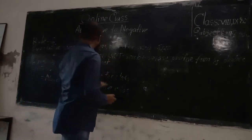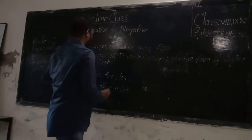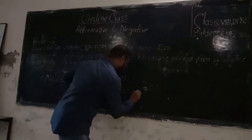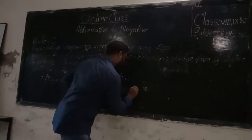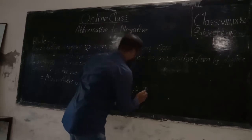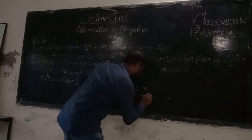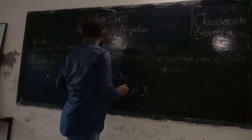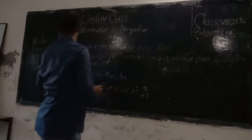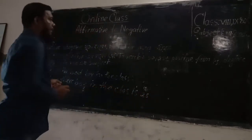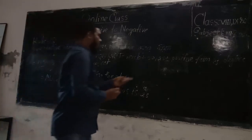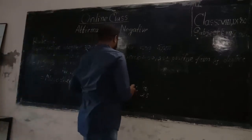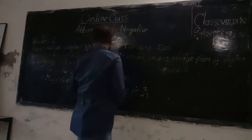Then we add the verb 'is,' followed by 'as' (so/as), then the positive form of the superlative degree. So the answer is: 'No other boy in the class is as good as he.'